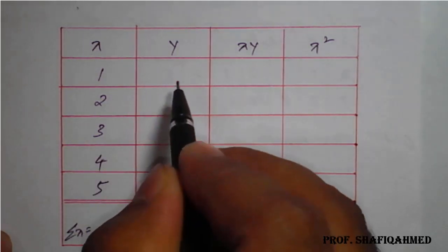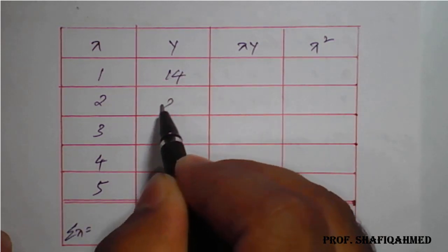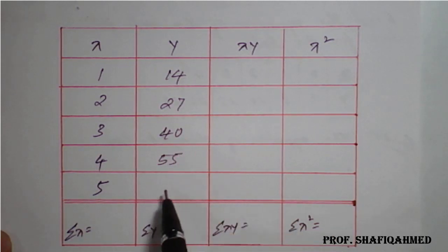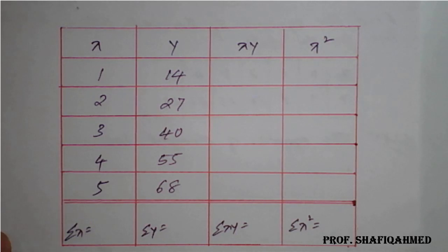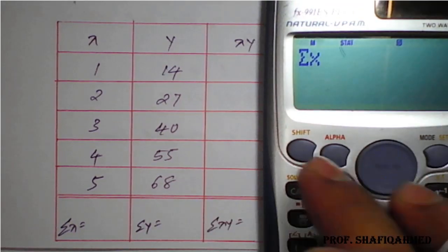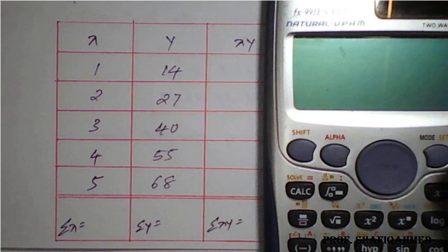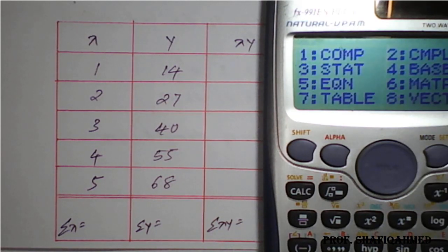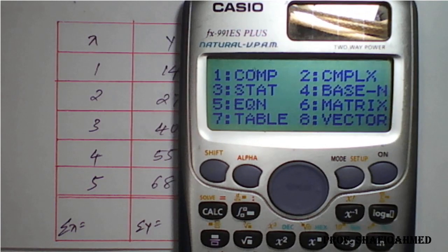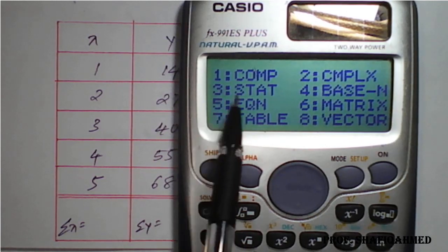The values of X are 1, 2, 3, 4, and 5. The values of Y given are 14, 27, 40, 55, and 68. We have to get summations for these. I will show the calculation with the help of a calculator — press MODE, and find the second option which is STAT.